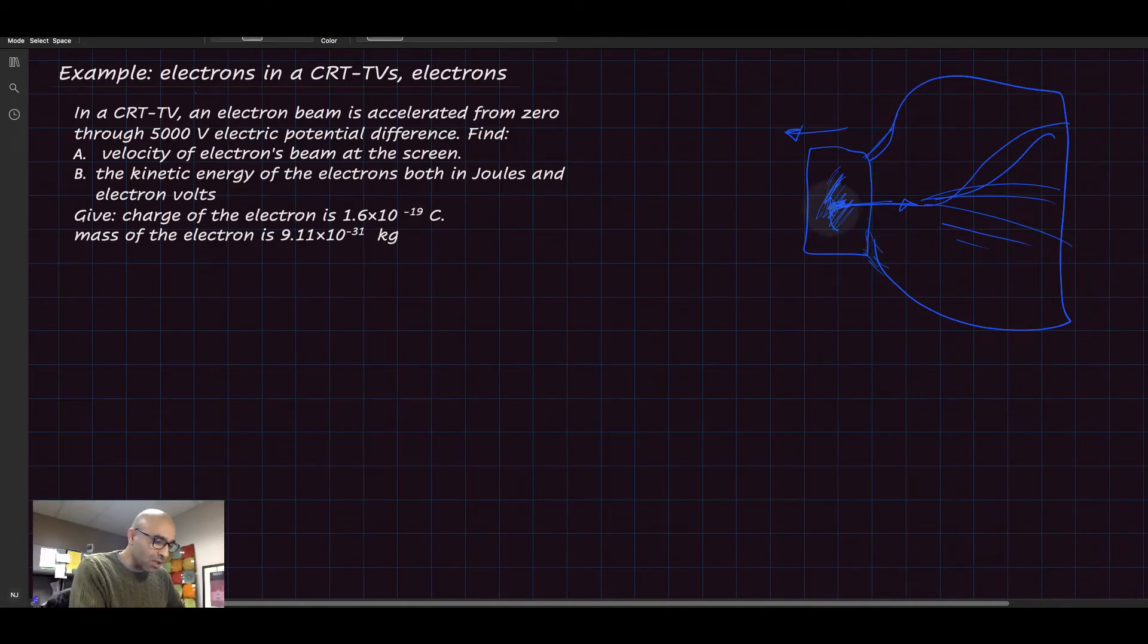The beam of electrons is made here and accelerated through a huge potential difference of 5000 volts. Now we need to find the speed or velocity at which the electrons hit the screen.